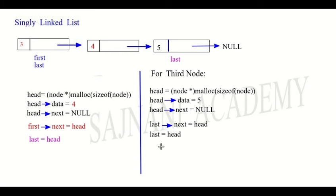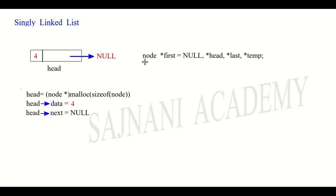There is one remaining question: how do we know whether a newly created node is the first one, or should be attached at the end? When we declare the pointer variables of type node, we set first = null. As long as first is null, it means no node exists yet. So our create function will identify whether the node being created is the first one, or is to be appended at the end of the list.